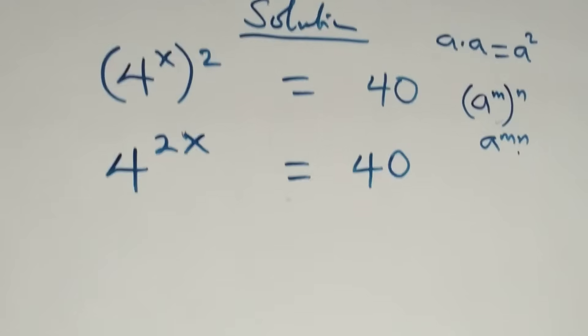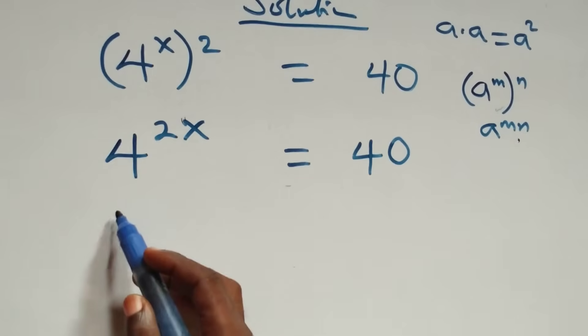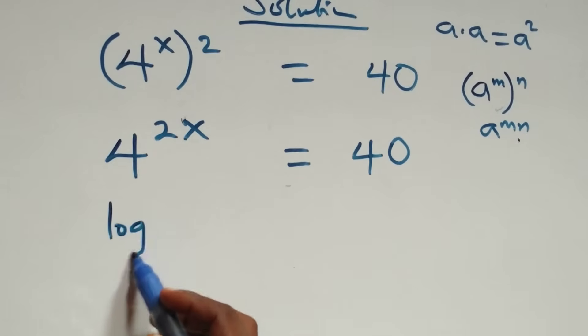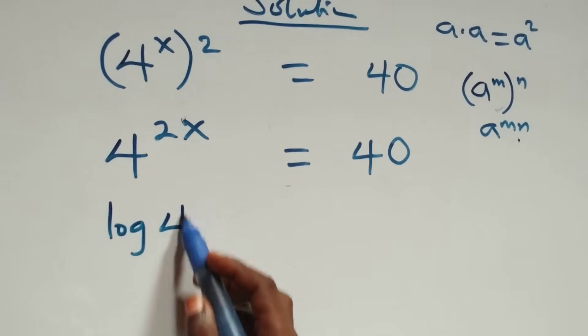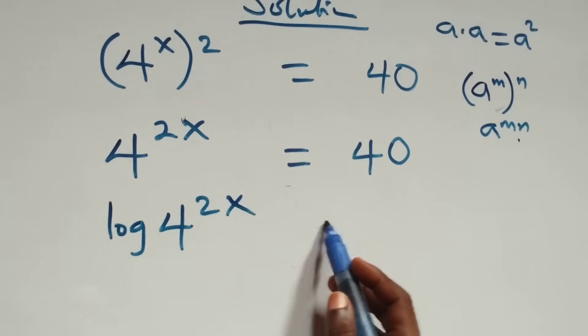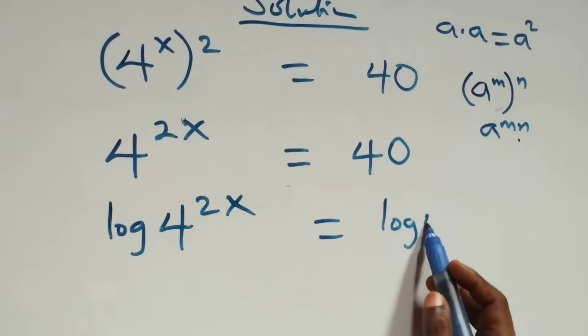The next step: we take the log on both sides. That is, we have log of four raised to power two x equals to log forty.